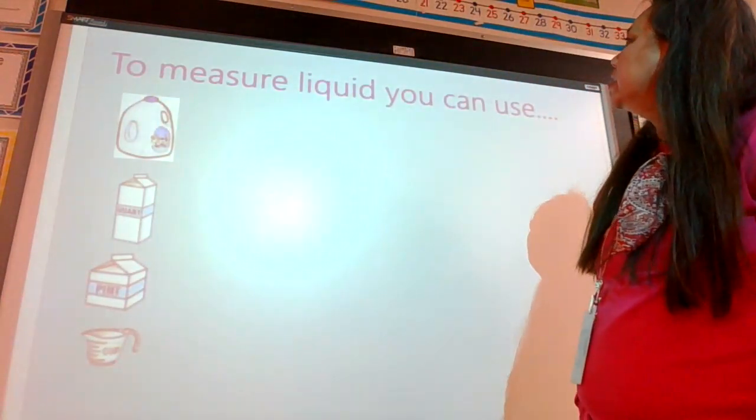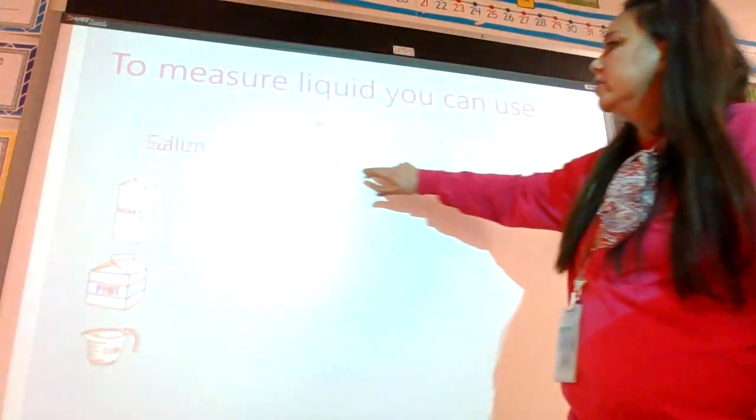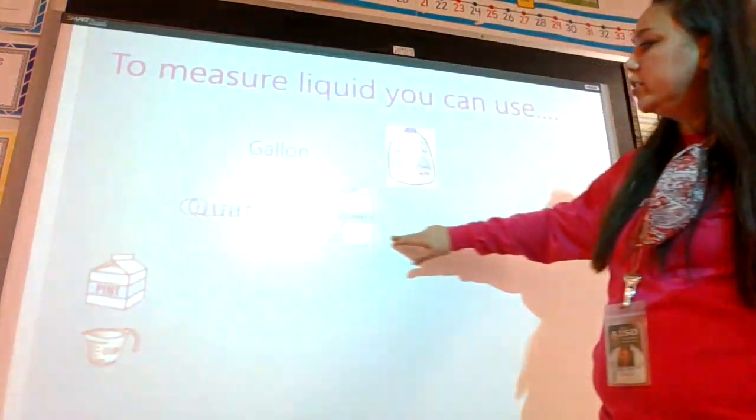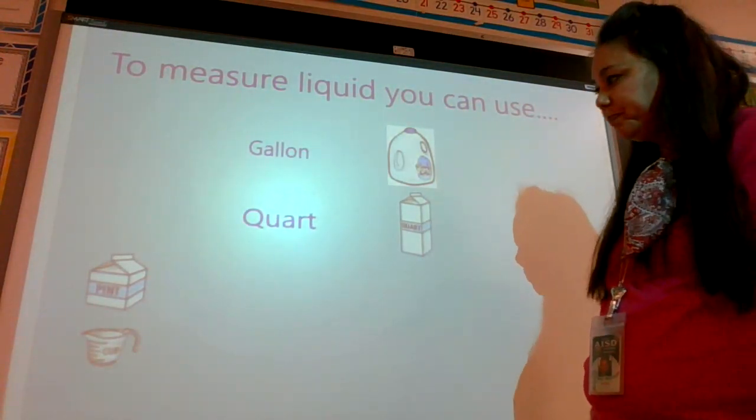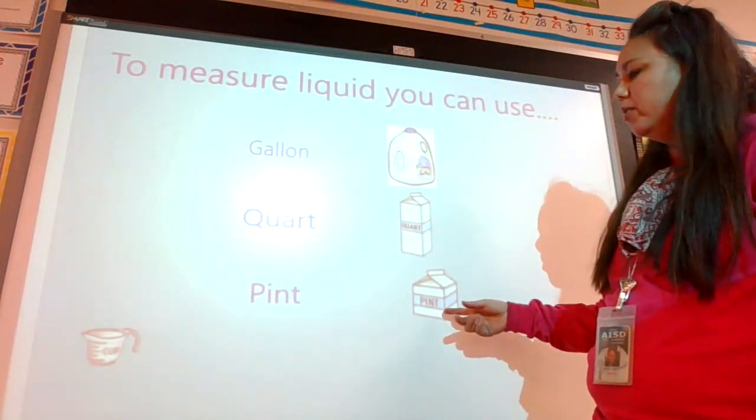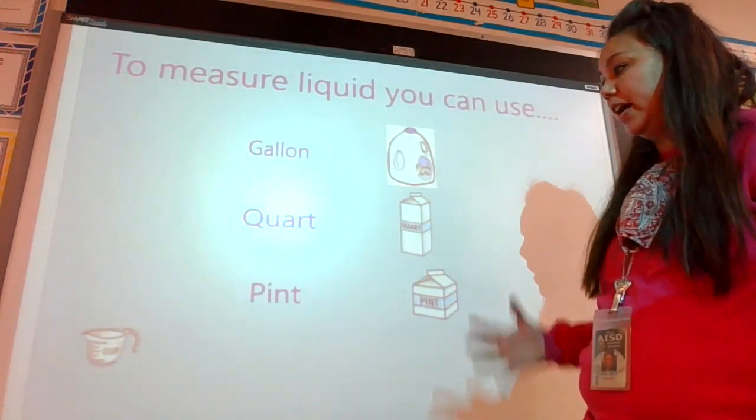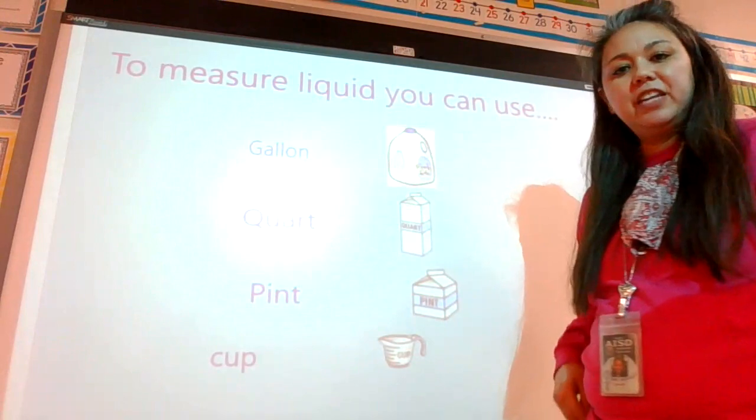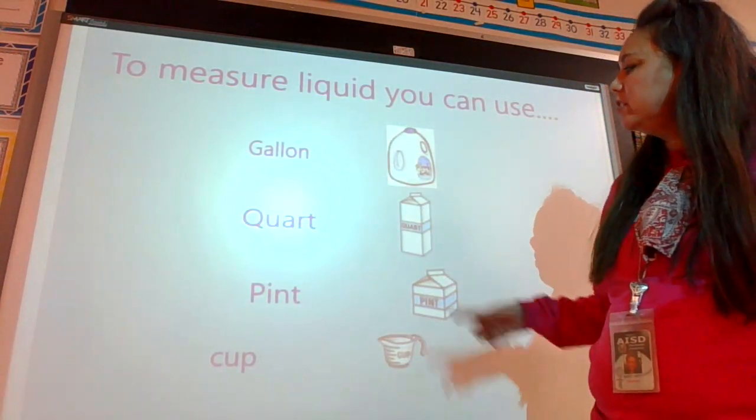To measure liquid, you can use a gallon. That looks like a gallon of milk. These are our units: we use a quart, that's a container. A pint, it's like your milk pint at school. A can of Coke is about a pint. And a cup. Think of those Styrofoam cups.